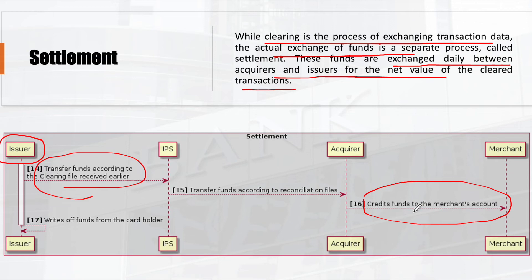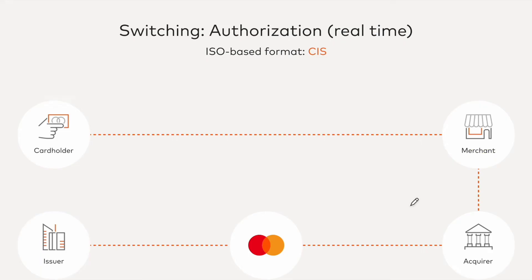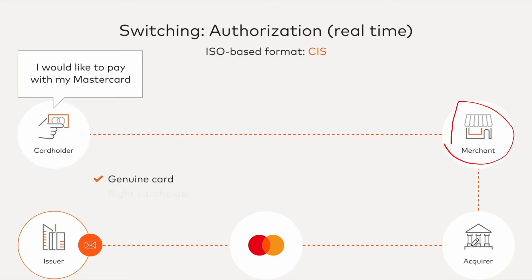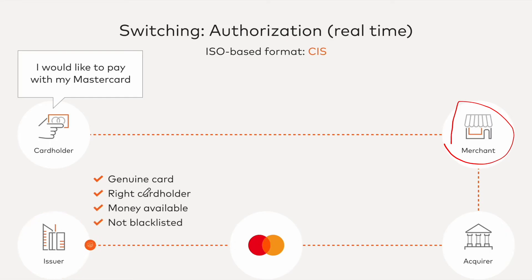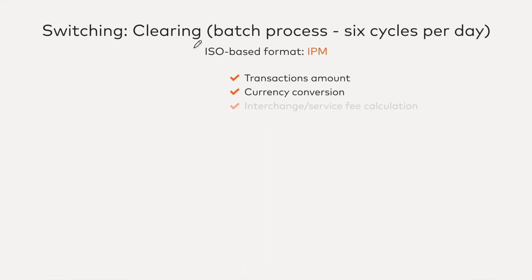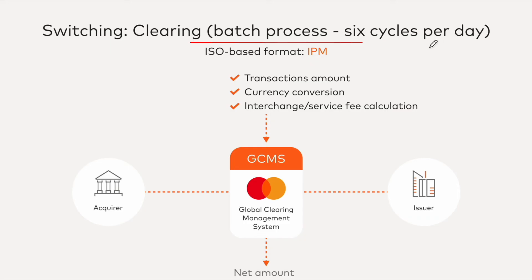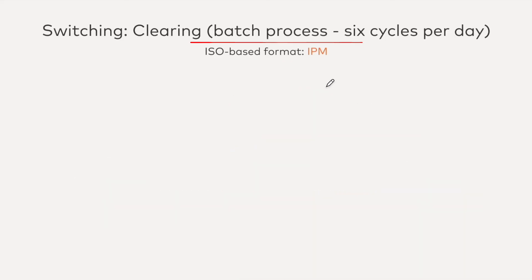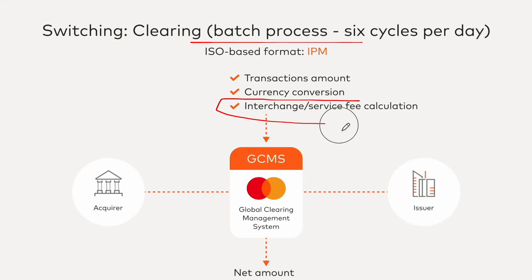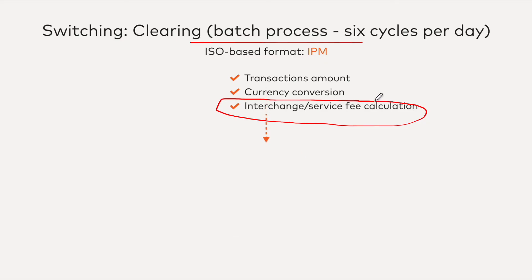Mastercard has explained these processes on their website. For authorization, the cardholder swipes their Mastercard at the merchant POS, it goes to the acquirer, and via the Mastercard network to the issuer. The issuer checks whether it is a genuine card, the correct cardholder, funds available, and not blocklisted, then sends the response back. The cardholder is notified whether the transaction is approved or denied. Clearing then happens as a batch process — six cycles per day — transferring files with transaction information, currency conversion, and interchange and service fee calculations.